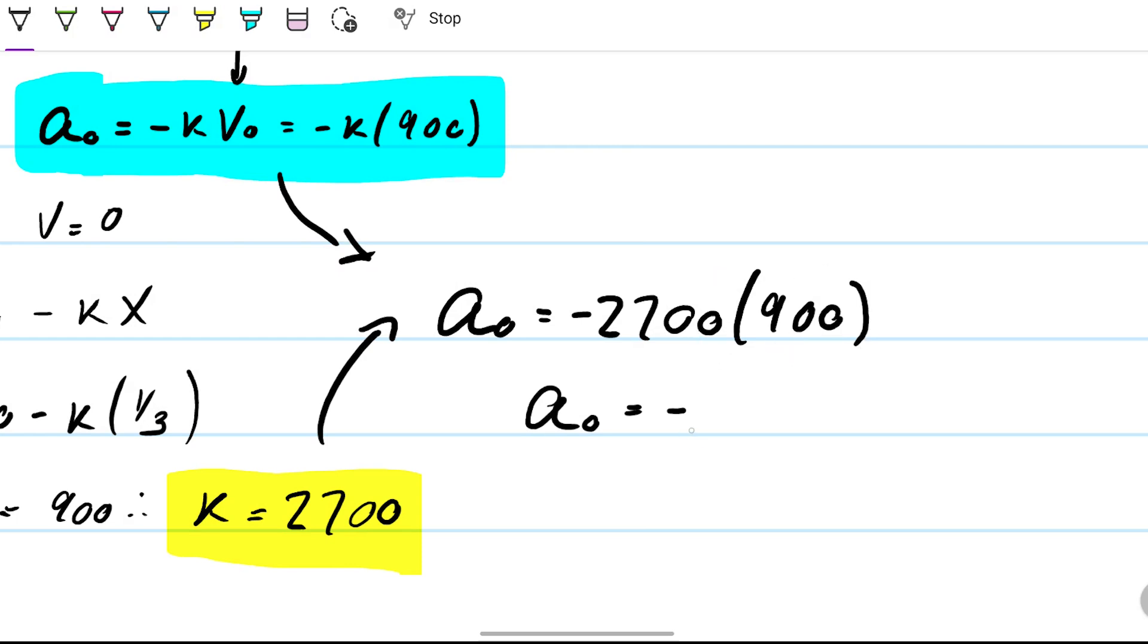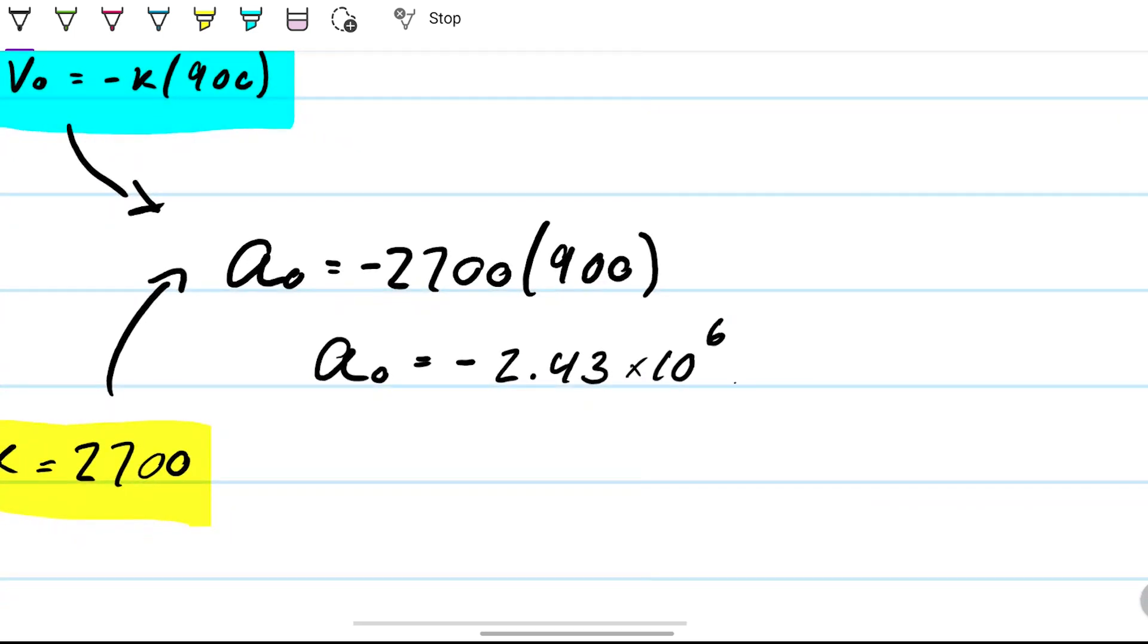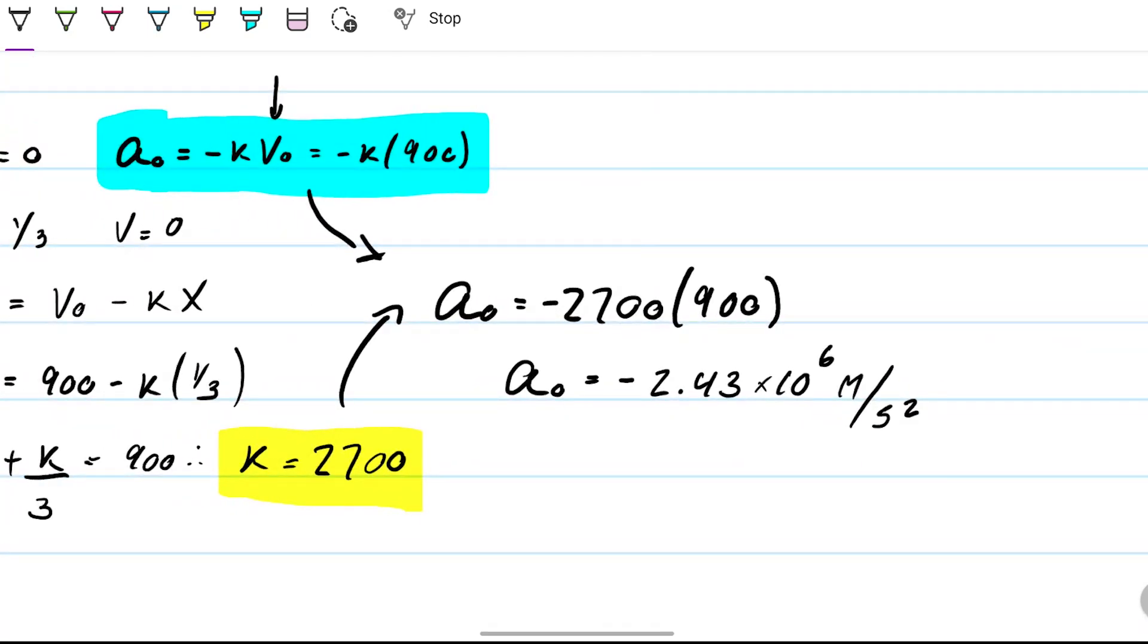243, so 243 times 10 to the fifth, is that right? 2 to the sixth because we have four zeros. So 2.43 × 10^6, and the unit here is meters per second squared. How do we know this?